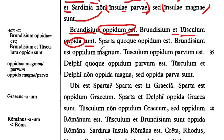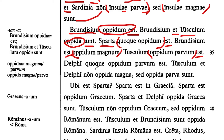Sparta — which I think we all know what that place is — is also a town or city. Brundisium is magnum — a large town. Tusculum is a small city. Whenever you're talking about a grand city like Rome, you start using terms like urbs, which we don't see until later.